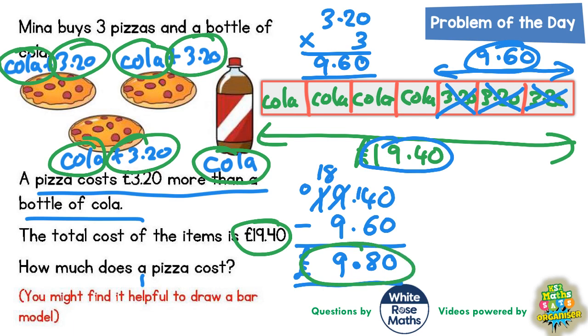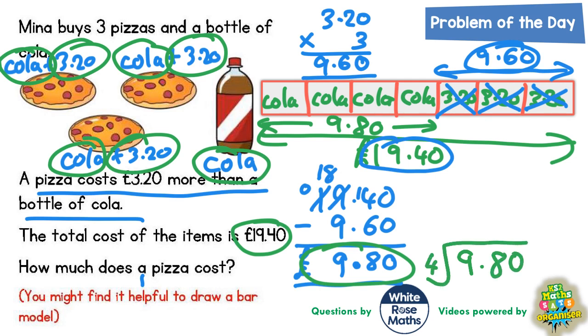So this £9.80 must be the price of the four bottles of cola put together. But we need to figure out what one bottle of cola is worth. So that would be £9.80 divided by four. Four into nine is twice, remainder one. Four into eighteen goes four times, with two left over. Four into twenty goes five times. So it's £2.45. So one bottle of cola is £2.45.